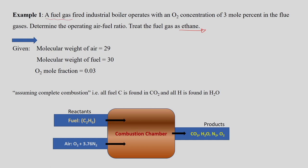A fuel gas-fired industrial boiler operates with an O2 concentration of 3 mole percent in the flue gas. This means 3 mole percent of O2 is coming out in the product gas. Based on this, we need to determine the operating air-to-fuel ratio. The fuel is treated as ethane.